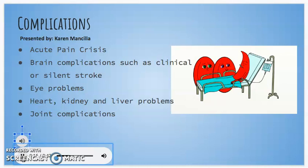Silent brain injury is damage to the brain without showing outward signs of stroke. It can lead to difficulty in learning, making decisions, or holding a job. Sickle cells can injure blood vessels in the eyes as well as in other organs such as the kidneys, the heart, and the liver. Decreased oxygen flow will result in a condition called avascular or aseptic necrosis, which severely damages the joints.